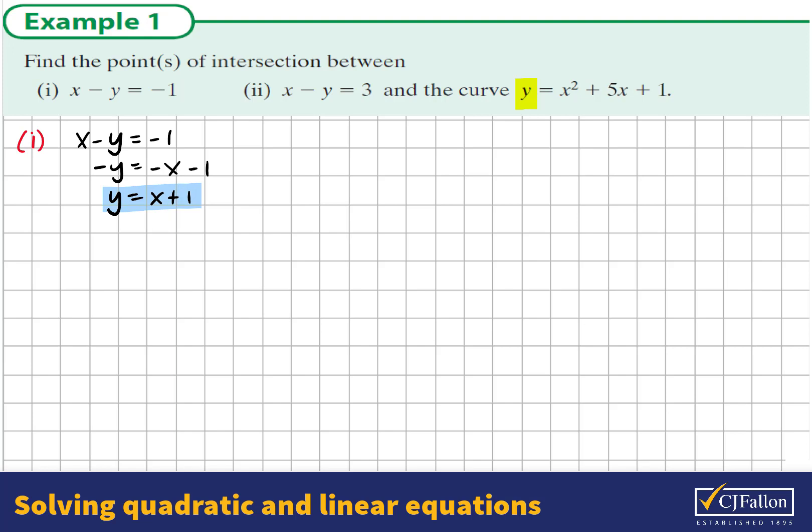So I'm going to replace y in our quadratic expression with x plus 1. That gives us x plus 1 equals x squared plus 5x plus 1. Rewriting this equation in terms of equals 0, by taking x and taking 1 from the right hand side, we end up with x squared plus 4x equals 0. There's a highest common factor of x, so the factors are x and x plus 4, giving solutions of x equals 0 and x equals negative 4.